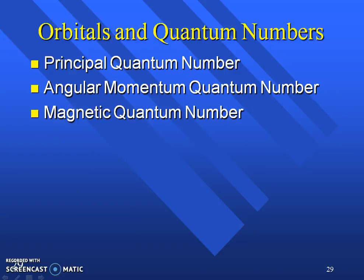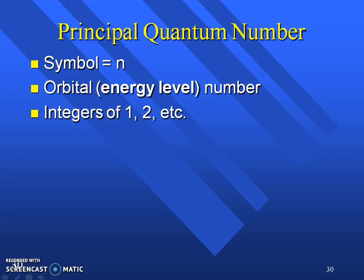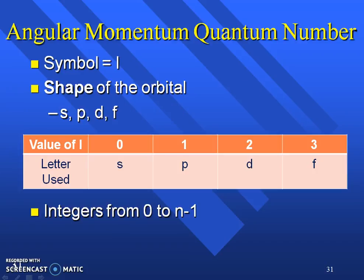These quantum numbers are labeled as the principal quantum number, the angular momentum quantum number, and the magnetic quantum number. The first one is the principal designated or symbolization of n because it represents the energy level, integers one, two, three, and so on.